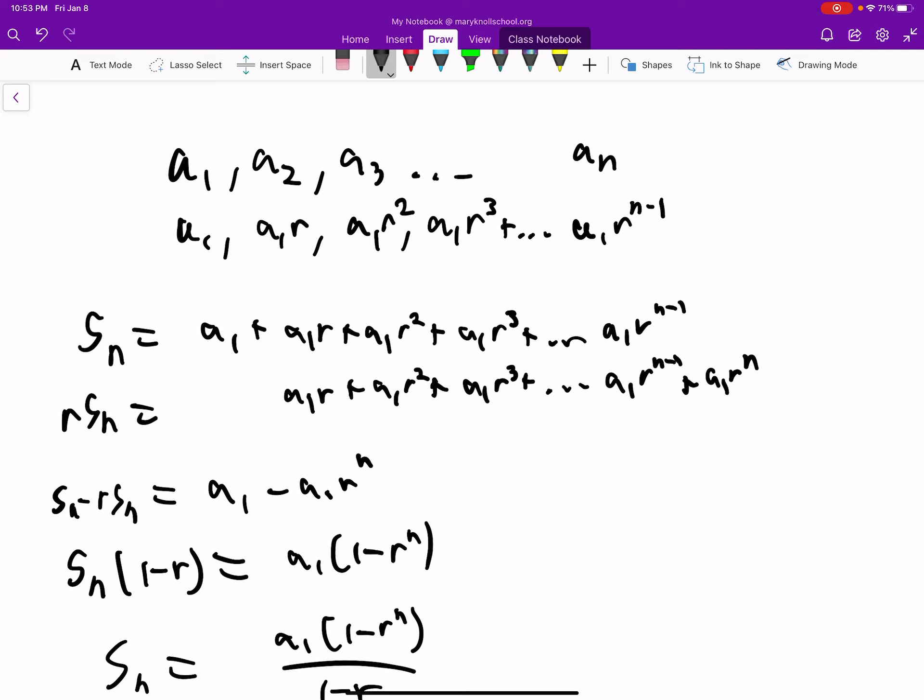Notice that an equals a1 times r to the n minus 1. So then what we do is add them all together to get the summation, and then we also multiply that sum by r. Then notice that these are both infinite, so if we subtract them, we get something that's finite.